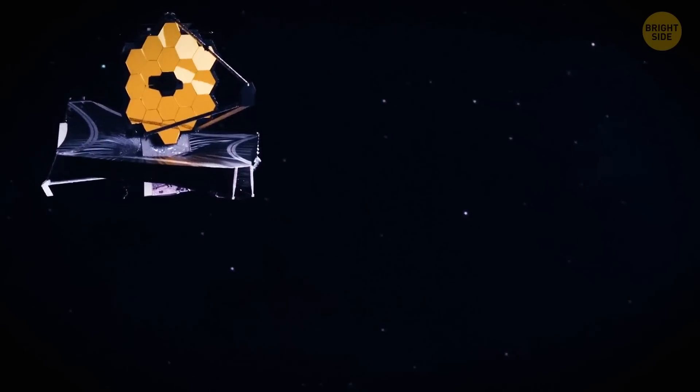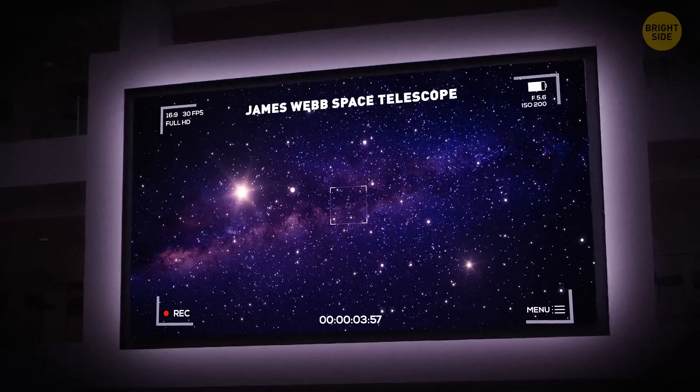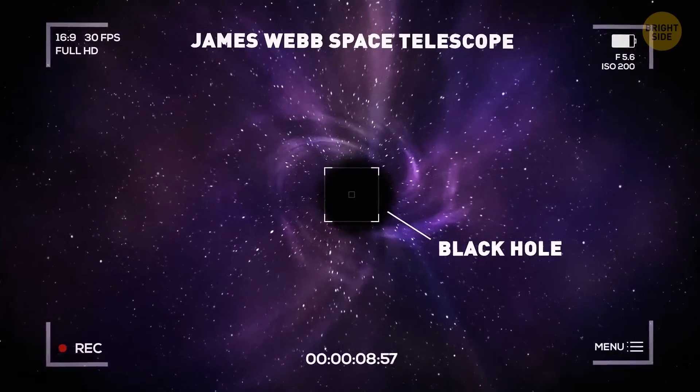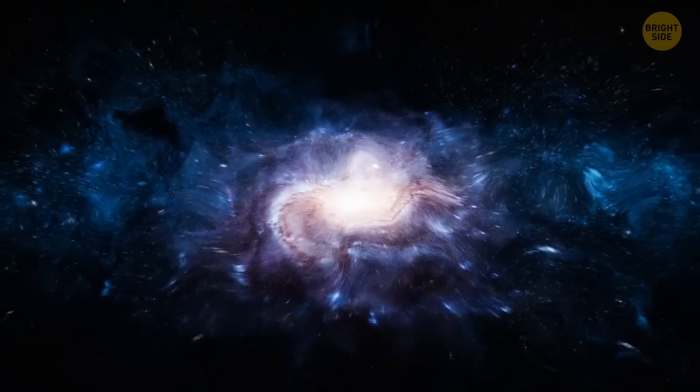But recently, James Webb has outdone itself. It spotted something it wasn't supposed to see. Astronomers using the telescope have detected a supermassive black hole from when our universe was less than 600 million years old.